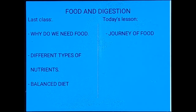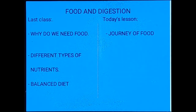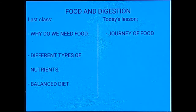Students, let us again discuss what we did in the previous lesson and what we will learn in today's class. In the last class we learned the necessity of food in the topic 'why do we need food.' Second was different types of nutrients, which include carbohydrates, proteins, fats, minerals, and vitamins. We also learned about their utilization and the amount they have to be taken. The third topic was balanced diet — that all nutrients are to be taken in proper amounts to remain healthy.